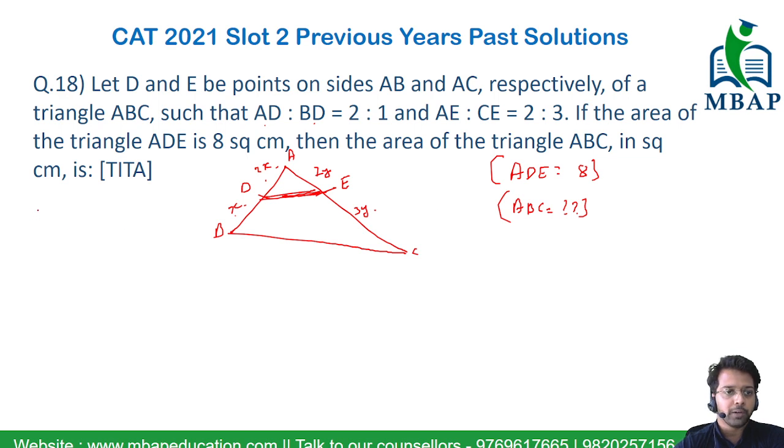You also know if you have a triangle which is let's take as PQR, the area for triangle PQR is also going to be given by half PQ sin R. Similarly, let's try to find the area of ADE using this formula. ADE is what we are looking at first.